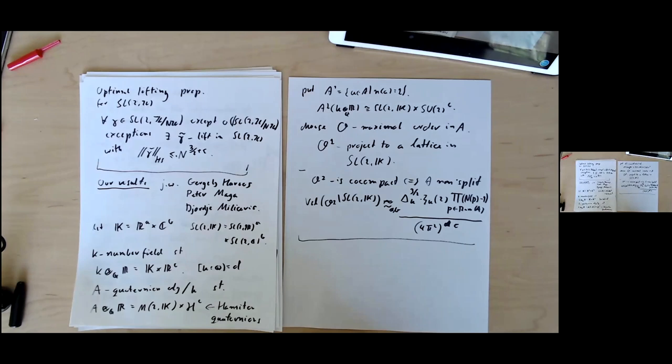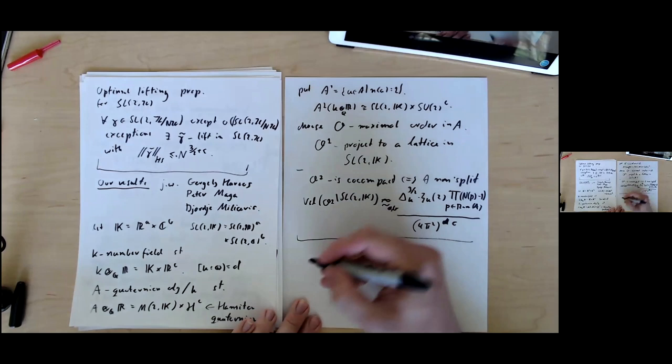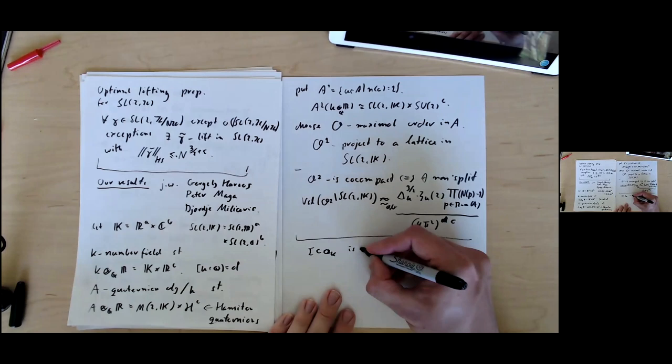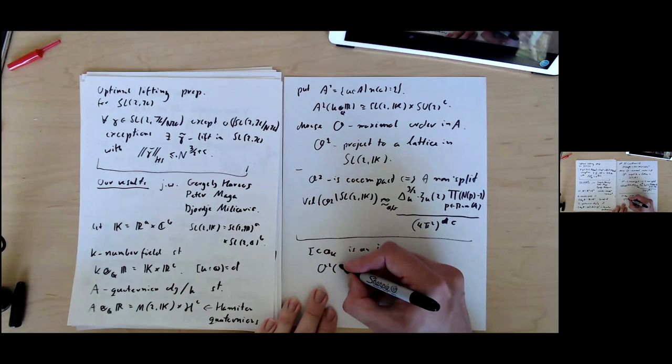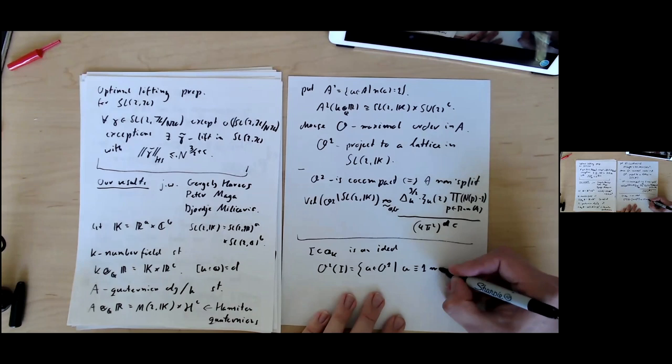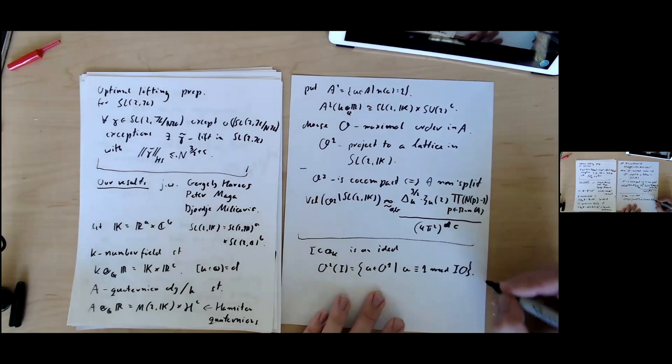Now this will be product over primes that are ramified in A, take their norm minus one, and I need to divide this by roughly 4 pi square power C. The constants I skipped, they depend on AB, but in our story we'll keep AB fixed, so we don't care about that. If we have the lattice O1, we can also consider principle congruent lattices.